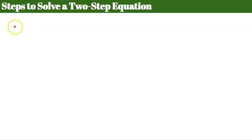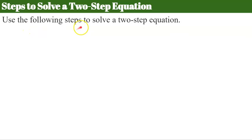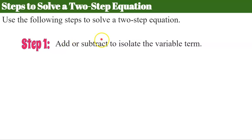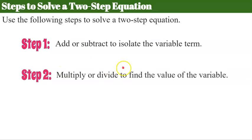Now let's learn how to do it algebraically. There are two steps to solving a two-step equation. Step 1 is to add or subtract to isolate the variable term. Step 2 is to multiply or divide to find the value of the variable. First, get the variable term all alone, then look at the coefficient of x.